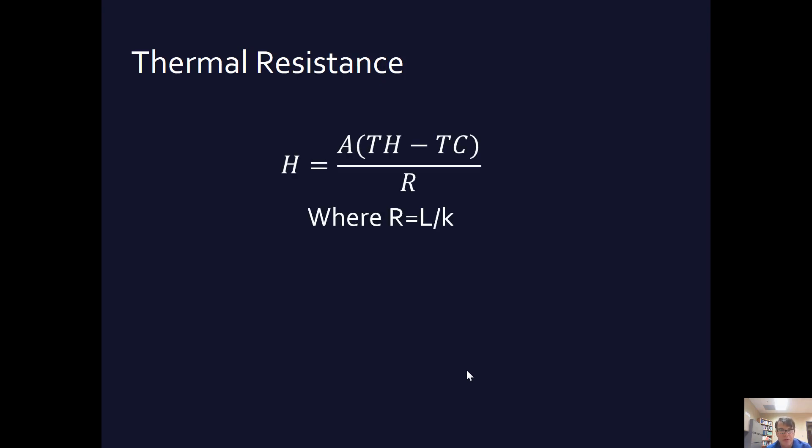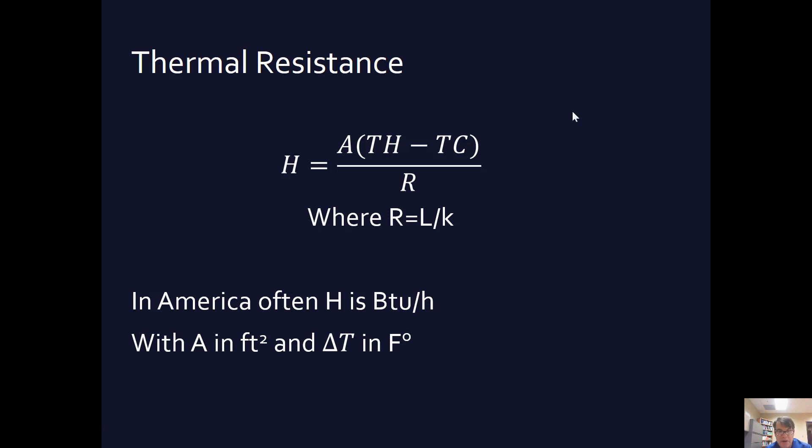Thermal resistance. This is something that you use in construction. A lot of times in America, we are old school, and so you talk about BTU, British Thermal Units per hour, with A in feet squared and change in temperature in Fahrenheit squared. But basically, if you take the equation and you take L over k, remember L was in the bottom and K was at the top. And so, if you divide by R, then that takes care of those two, and you're left with this. R is sometimes called the thermal resistance of a material. That is sometimes a number that is relevant to heating and cooling in the construction business.